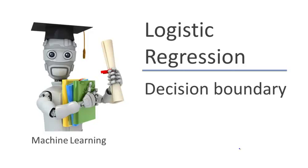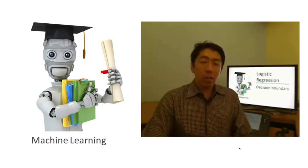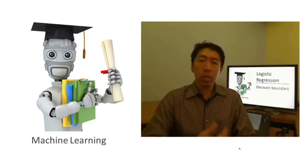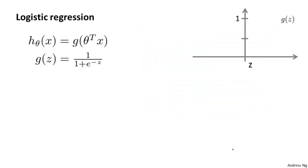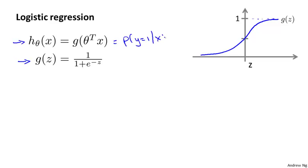In the last video, we talked about the hypothesis representation for logistic regression. What I'd like to do now is tell you about something called the decision boundary, and this will give us a better sense of what the logistic regression hypothesis function is computing. To recap, the hypothesis is represented as h of x equals g of theta transpose x, where g is the sigmoid function, which slowly increases from 0 to 1, asymptoting at 1. This hypothesis outputs estimates of the probability that y is equal to 1, given x and parameterized by theta.